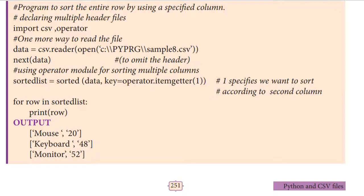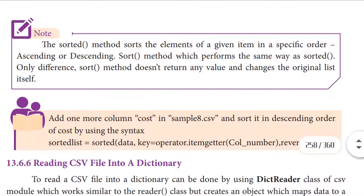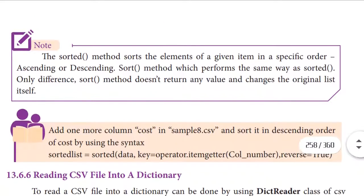The sorted() method sorts the elements of a given item in a specific order — ascending or descending. With the help of the sort method, we can arrange data either in ascending or descending order. The sort() method performs the same way as sorted(). The only difference is that the sort() method does not return any value and changes the original list itself.